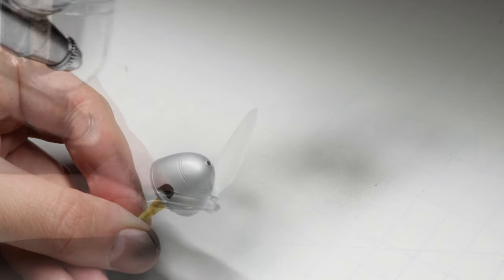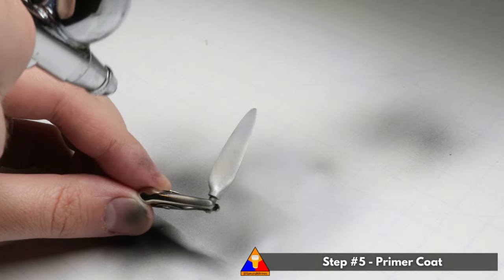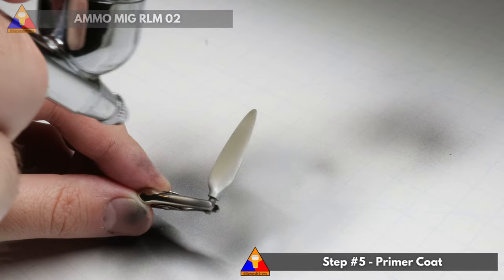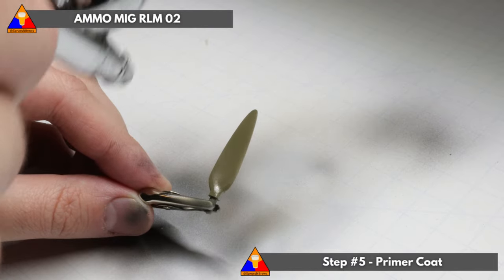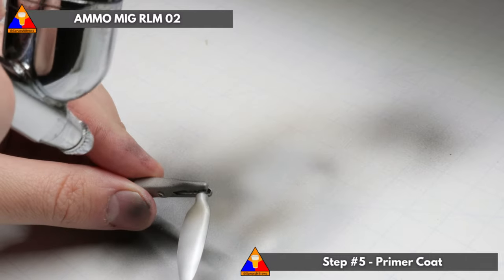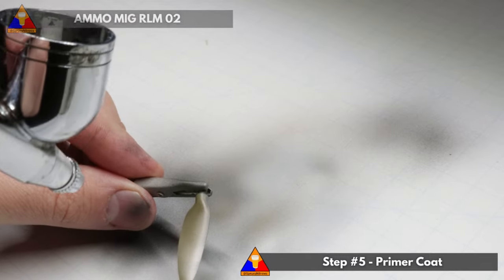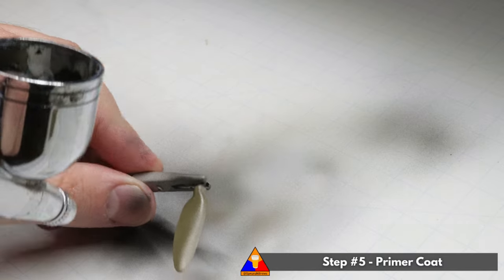Once that's dry, we're going to move on to our primer layer. Now, Luftwaffe aircraft would have received a coat of RLM-02 green slate in the factory right over the bare aluminum, so that's what we're going to do here. If you're building an aircraft of another nation though, just be sure to research what the correct primer coat color would be.